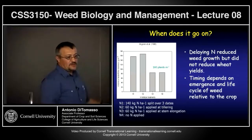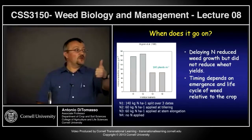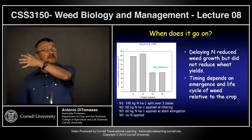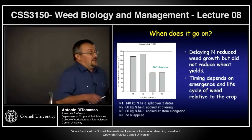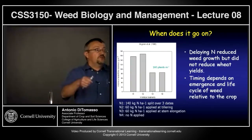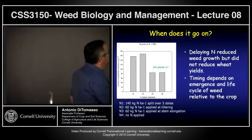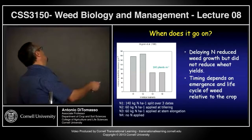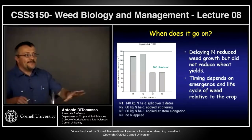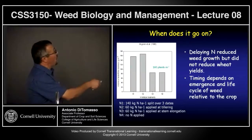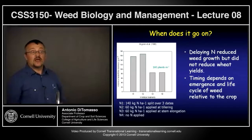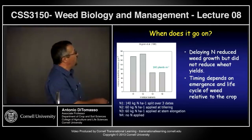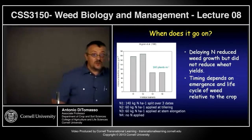The question is: does it matter what type of nitrogen goes on? Yes, for some species. Does it matter when it goes on — at the beginning or end of the season, should we split applications? Because if weeds are much better at picking it up and we give them a one-shot amount, we're bolstering the weeds, not the crop. Here's data on Veronica hederifolia (Speedwell): biomass of the weed under different fertilizer treatments, looking at what happens if you apply 140 kg N/ha split over three dates.